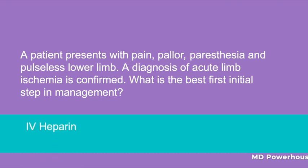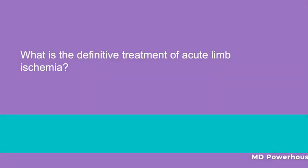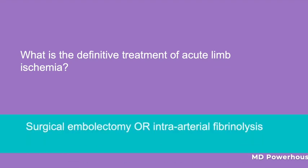What is the definitive treatment of acute limb ischemia? Surgical embolectomy or intra-arterial fibrinolysis.